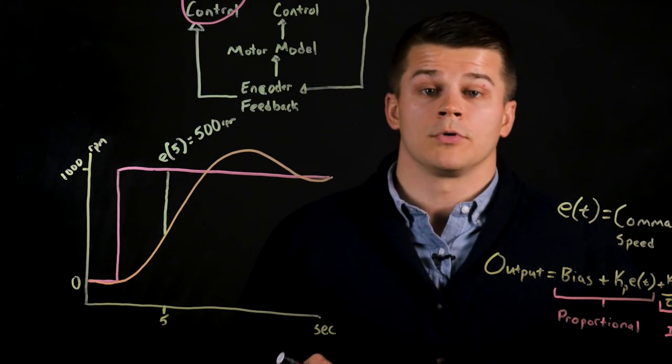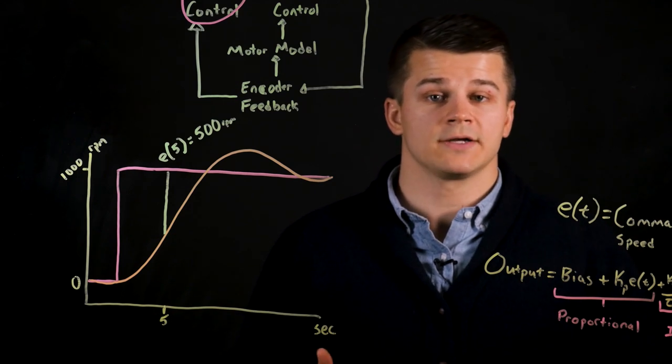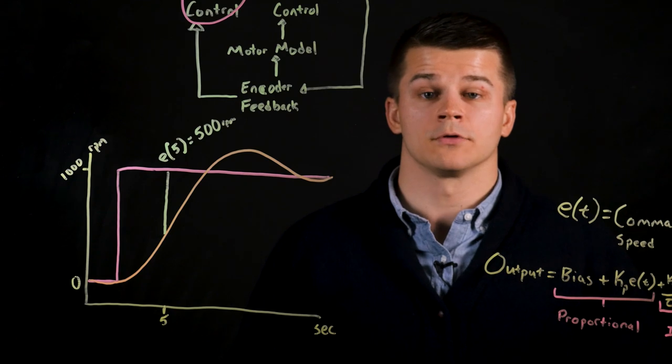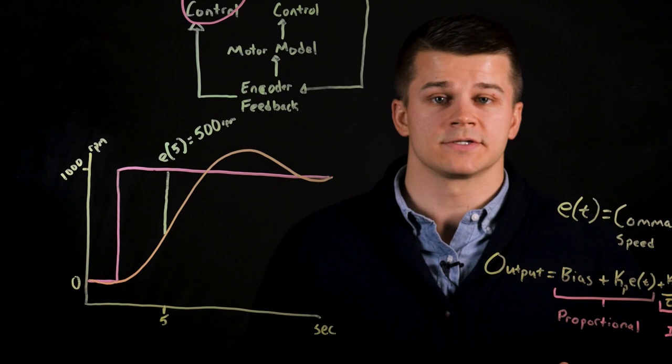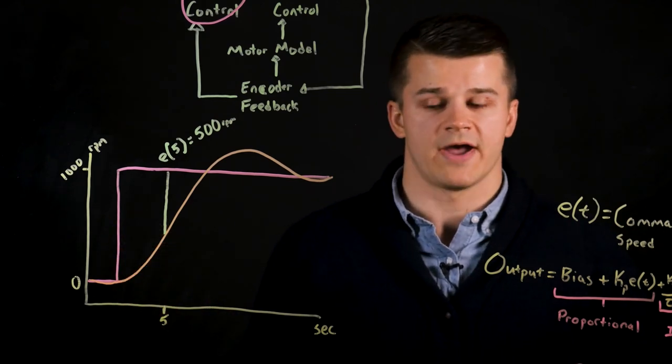The integral control portion is a little bit more difficult to calculate because we can't simply just subtract the command speed versus the actual speed. Instead we must take the integral from time zero to the current point in time of the control. We add up the area between the command and actual speeds in our graph.